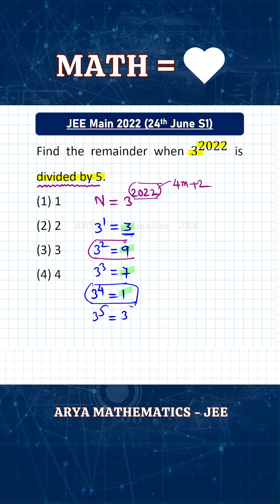If the exponent is of the form multiple of 4 plus 2, the digit at unit place must be 9. And if the digit at unit place is 9 and we divide the number by 5, then remainder will be 4. So the right answer for this problem will be fourth option.